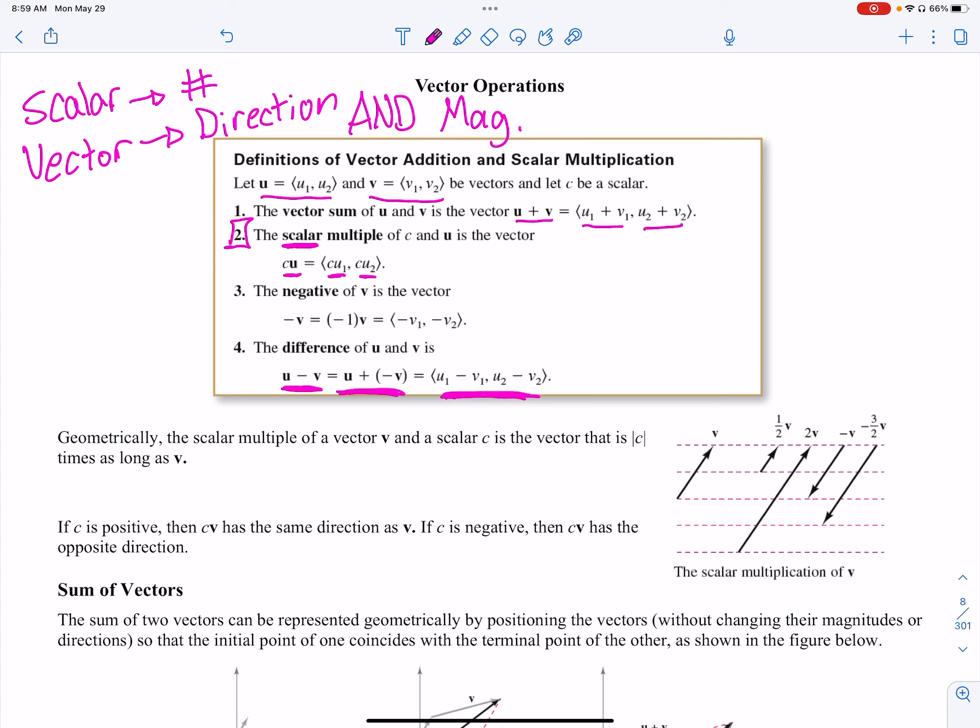So this whole multiplying by a scalar does not change the direction, it just changes the length. A negative takes the vector, and it does affect the direction, but it just points it in the negative direction, the opposite. That makes sense, right? Negative typically means opposite. So a v going in one direction, negative v goes in the complete opposite. And then the last one, negative three halves - negative points it in a different direction, and it's three halves of the length.